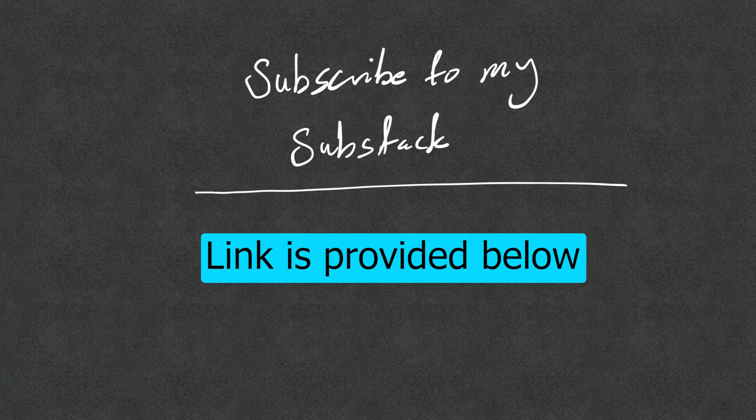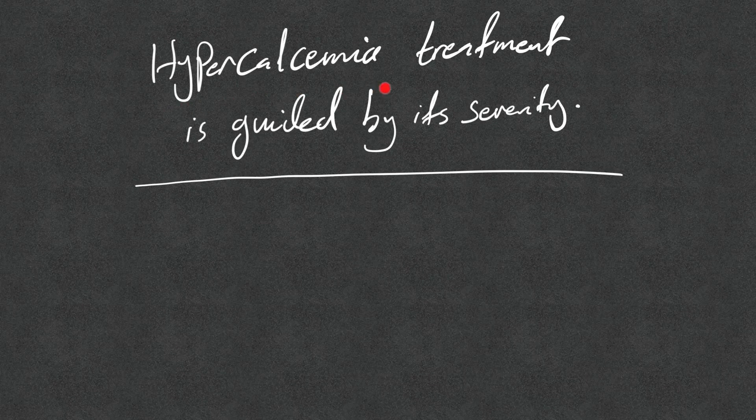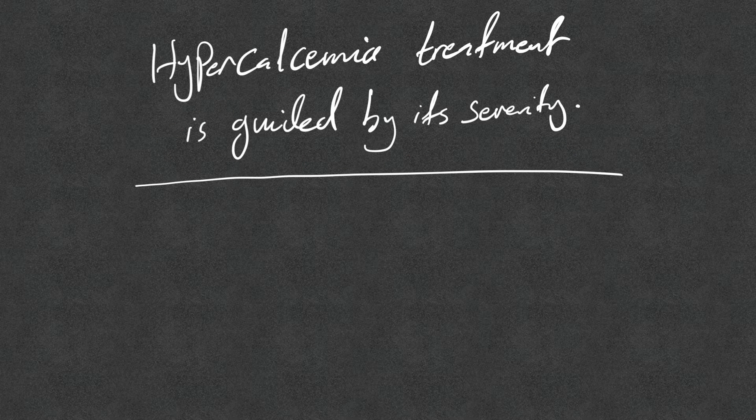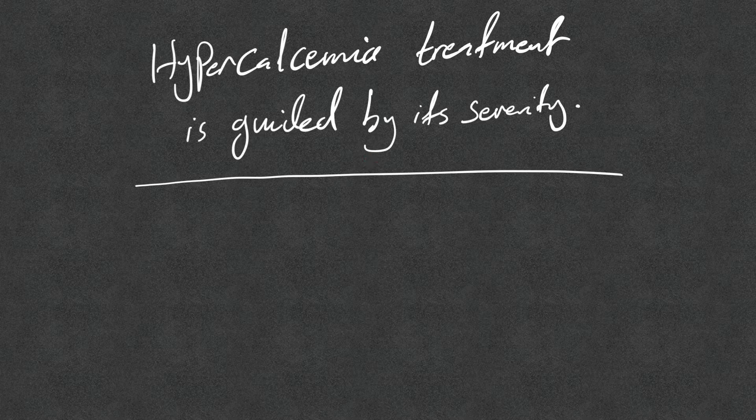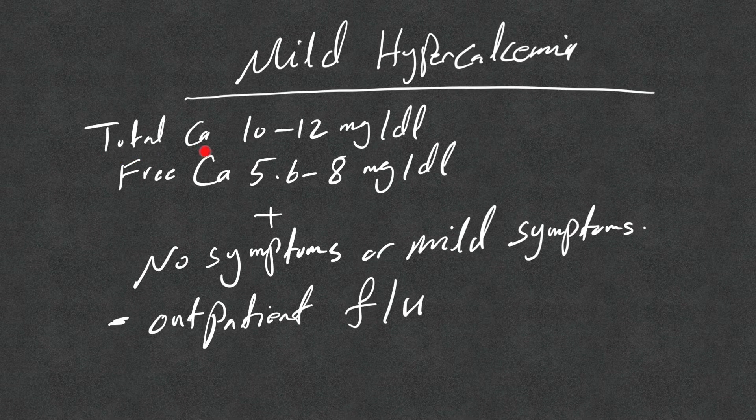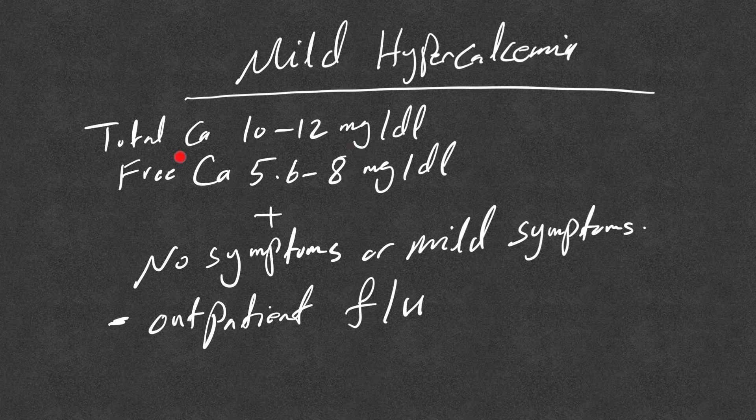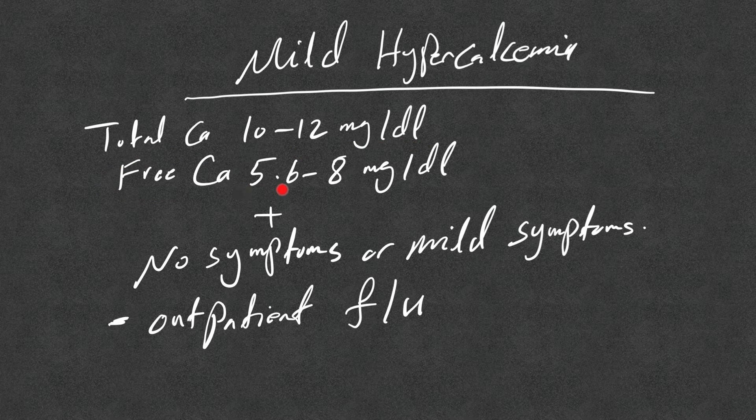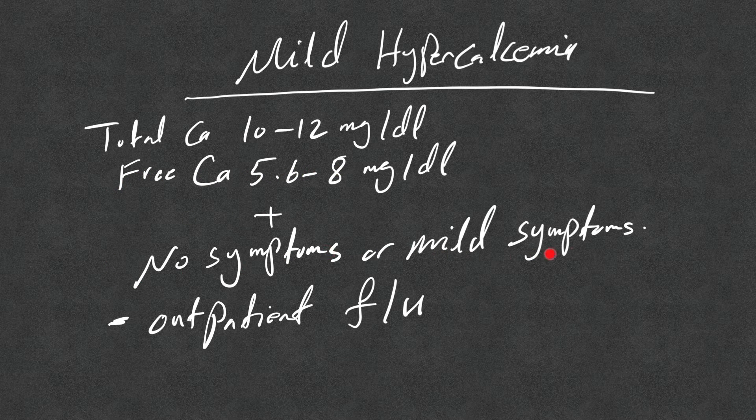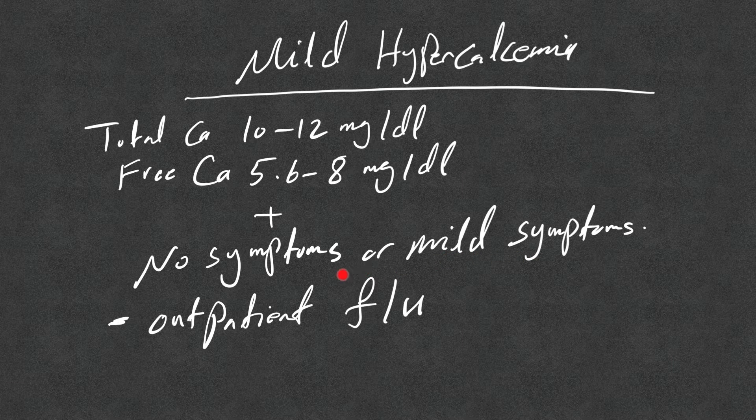Hypercalcemia treatment is guided by its severity, so the first thing we need to decide is how severe the hypercalcemia is. Mild hypercalcemia: total calcium is 10 to 12 milligrams per deciliter or the free calcium or ionized 5.6 to 8 milligrams per deciliter. Again, your facility may use a different reference for this, plus there is no symptoms or only the presence of mild symptoms.